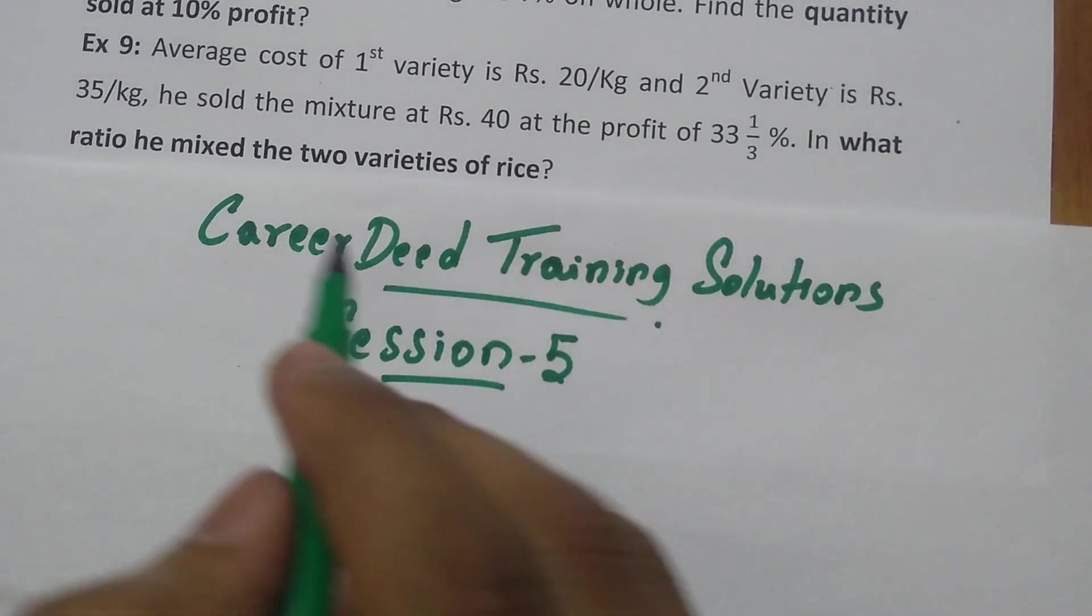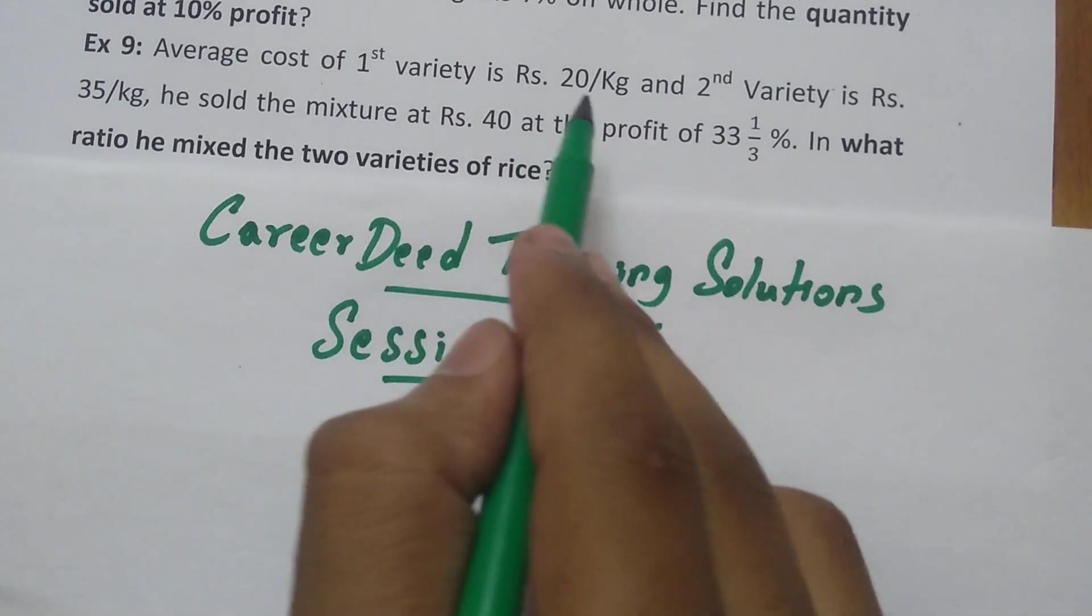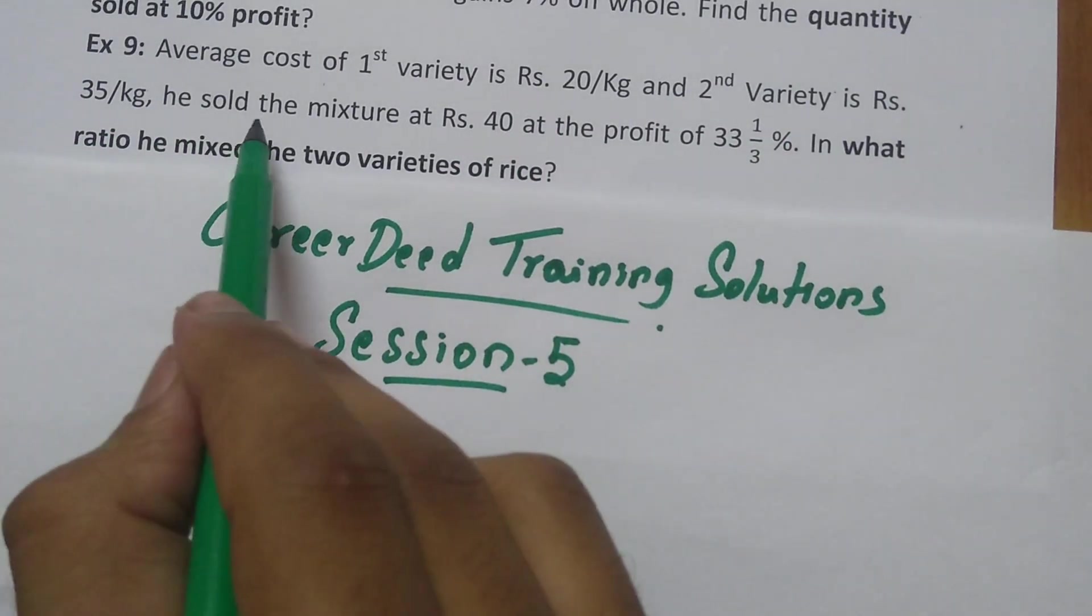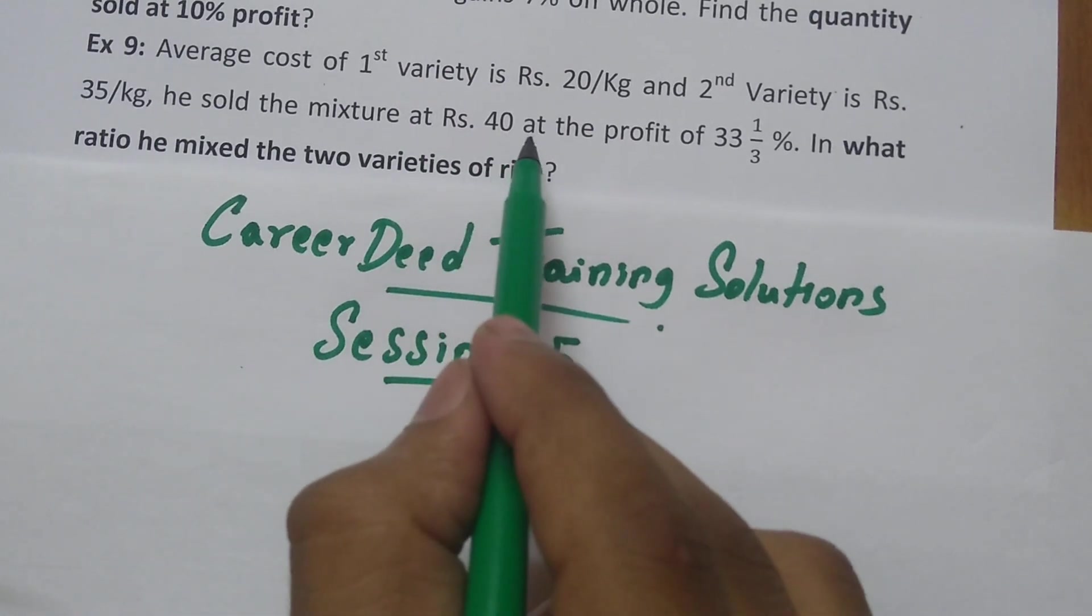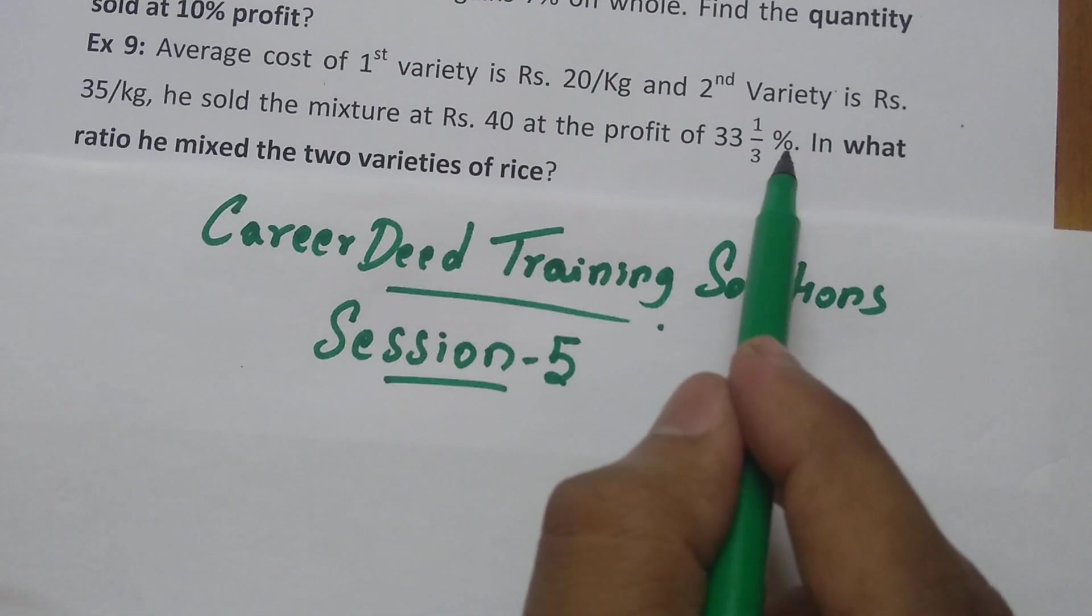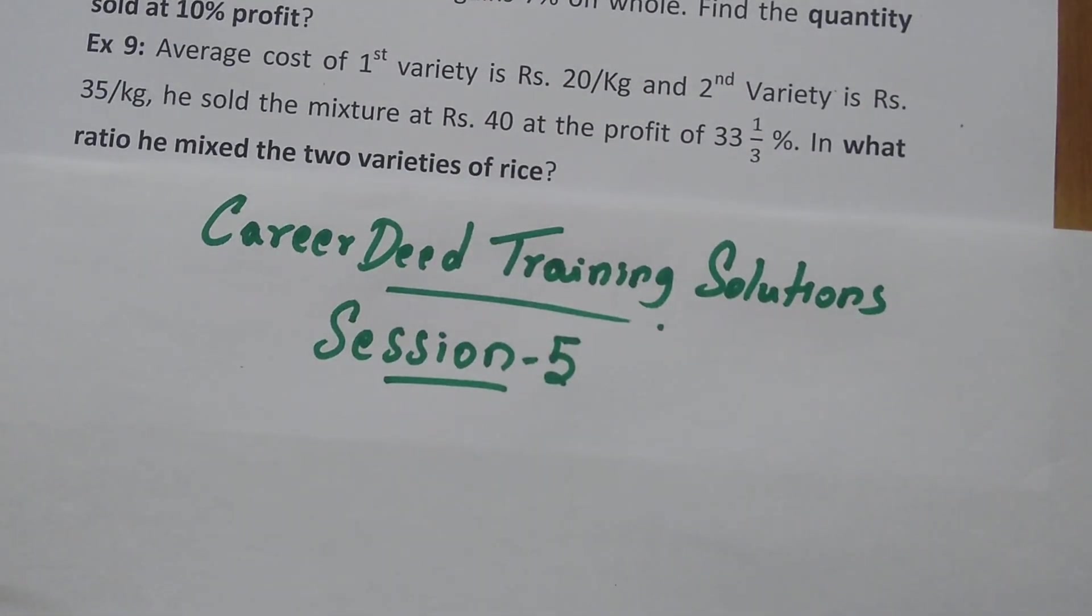Let us have a look at the first question. The average cost of the first variety is Rs. 20 per kg and the second variety is Rs. 35 per kg. He sold the mixture at Rs. 40 per kg at a profit of 33⅓%. In what ratio he mixed the two varieties of rice?